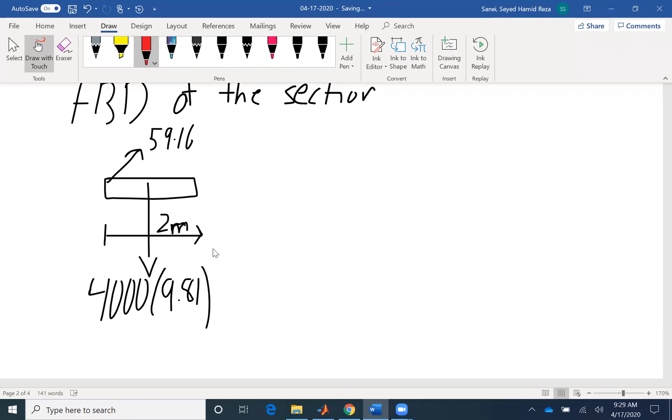Now we need to write our internal forces. Based on convention, we don't know the forces yet, but based on convention, tension is positive. Positive curvature, the moment that causes the positive curvature would be positive. And also the shear forces. A shear force that will cause my section to rotate clockwise would be positive. So I have N, I have V, and I have M.